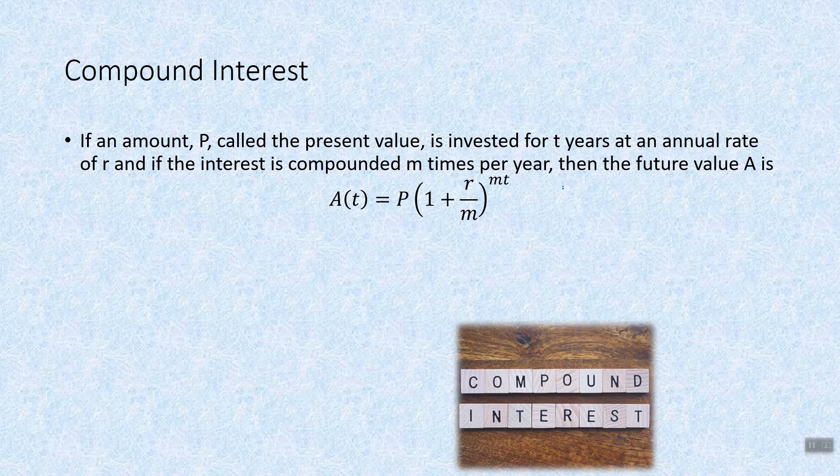Now, m depends on some words. We have annually, m equals 1. We have semi-annually, m equals 2. We have quarterly, m equals 4. There are four quarters in a year. We have monthly, m equals 12. We have weekly, m equals 52. We have daily, m equals 365. We kind of ignored leap days. Semi-annually happens twice a year. So all of these different words will tell us what our m value is.